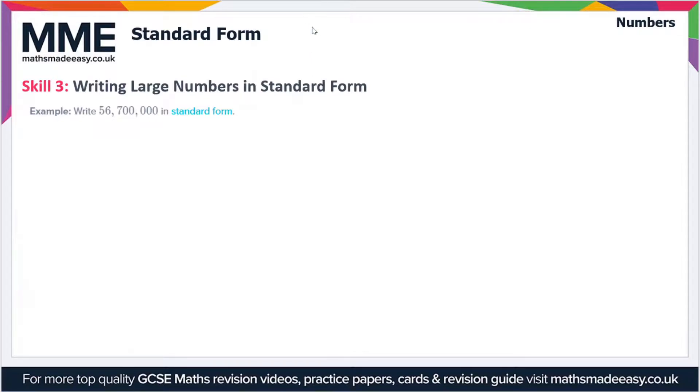Let's remind ourselves: standard form is A times 10 to the power n, and A can be between 1 and 10 but not including 10, so it can include 1. We have to write 56,700,000 in standard form.